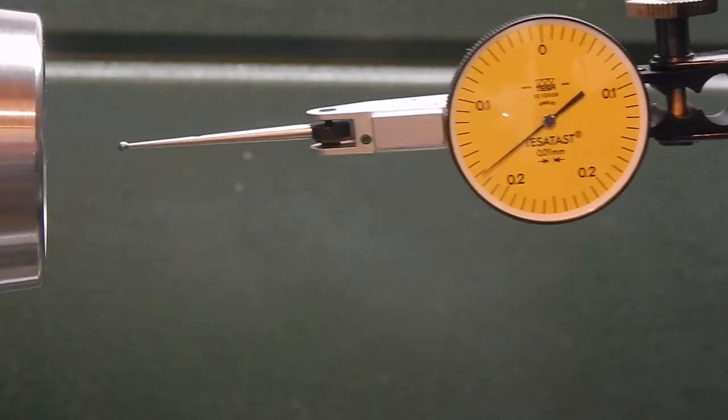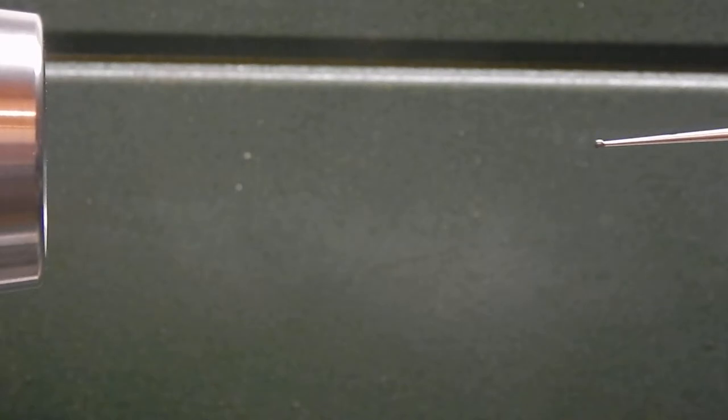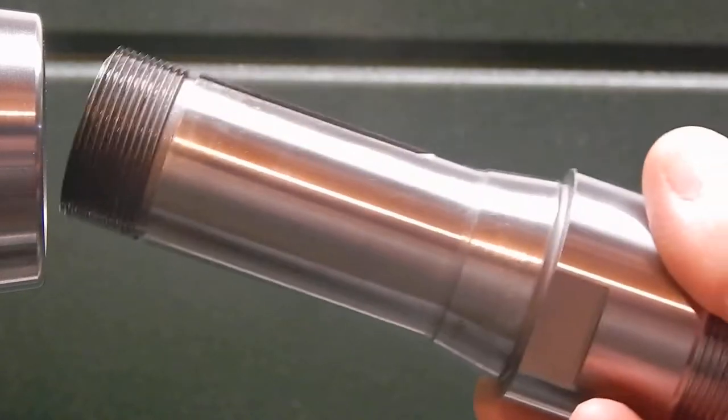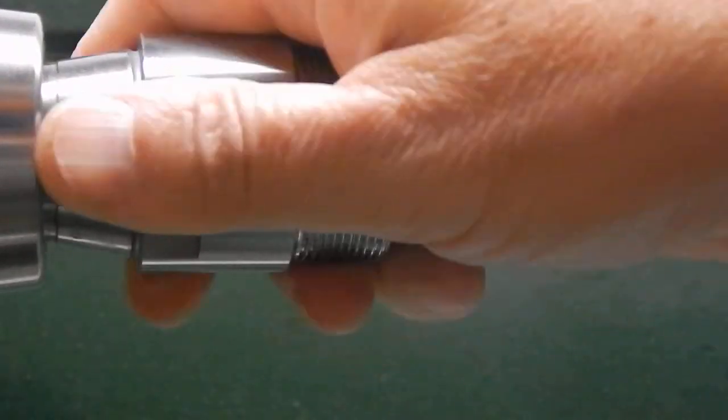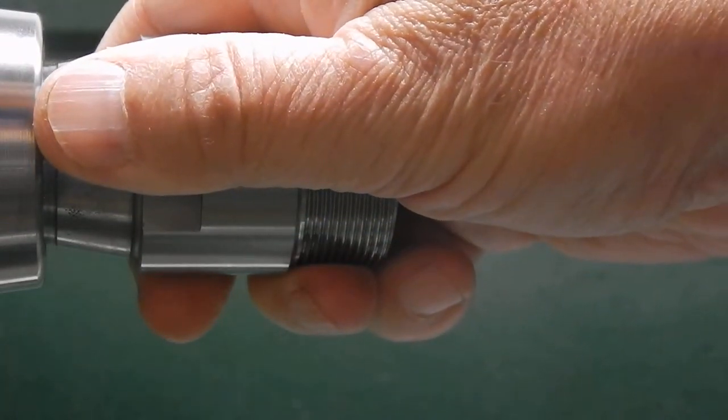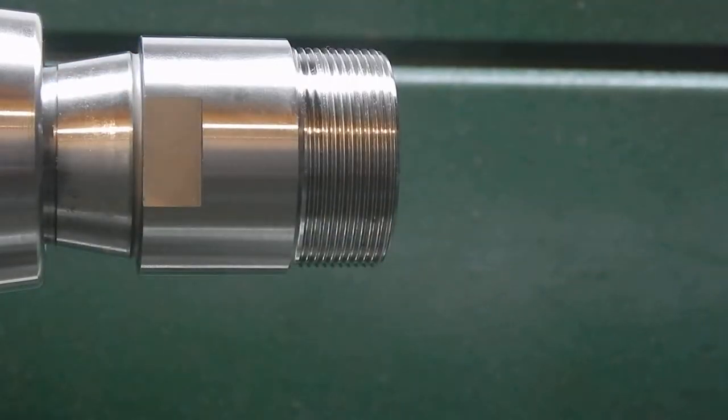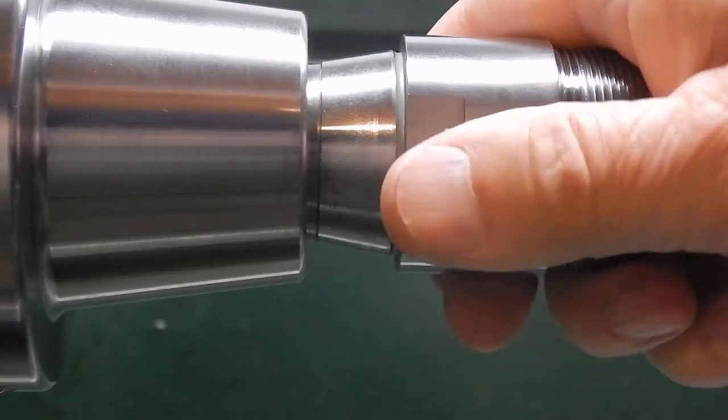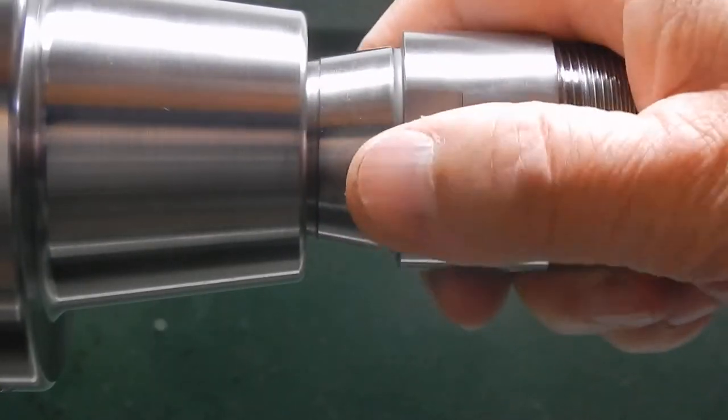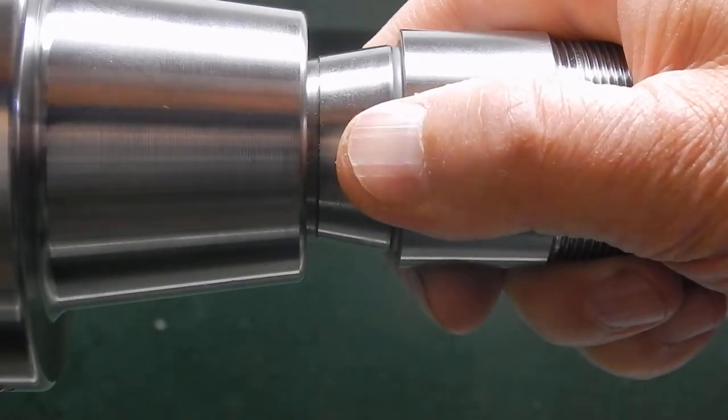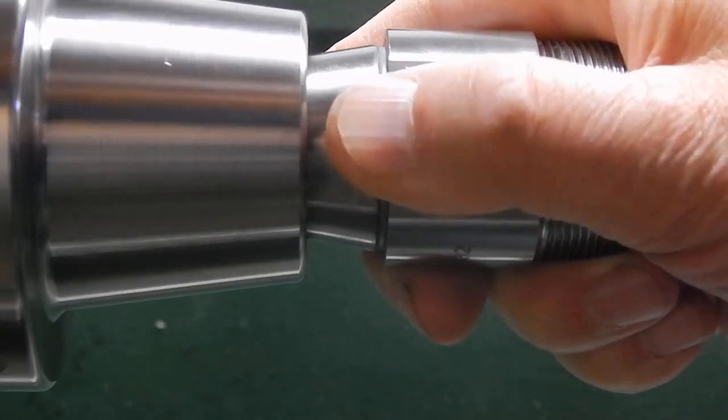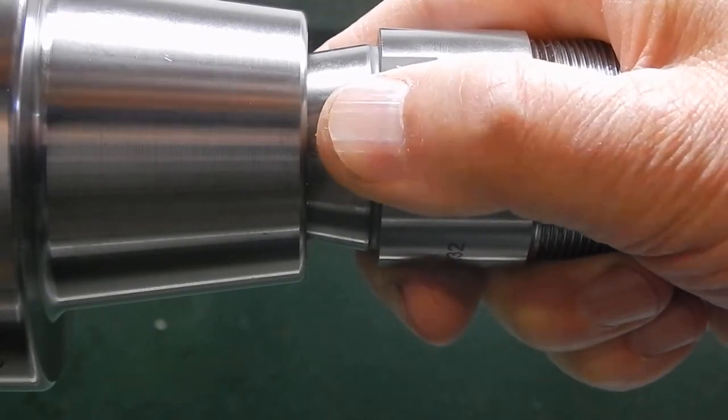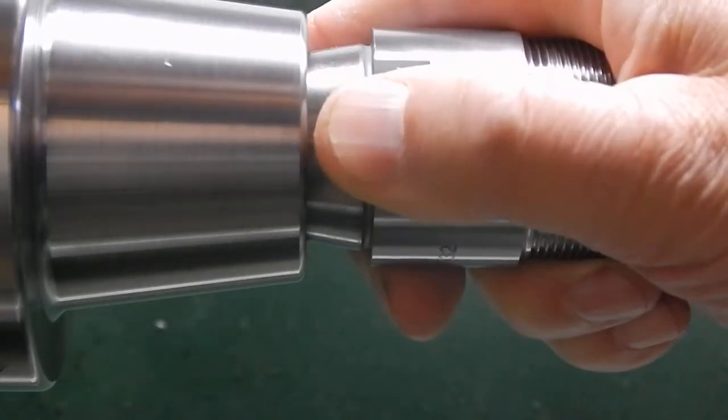Let's take the indicator out and put the Banggood tool holder in place. It will take a while because these chucks are notoriously slow, but that's okay for demonstration.